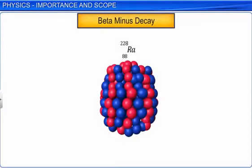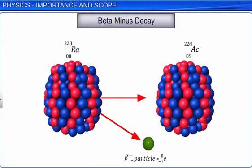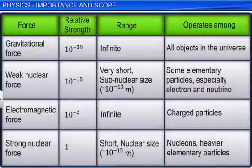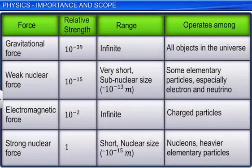Weak nuclear force comes into existence in case of beta decay of a nucleus. In beta decay, the nucleus emits an electron and an uncharged particle called neutrino. The table shows the relative strength and range of all the four fundamental forces of nature.